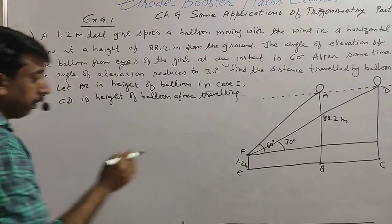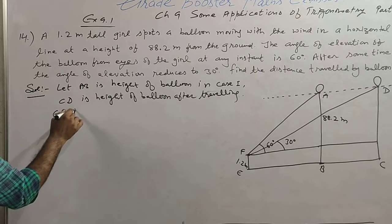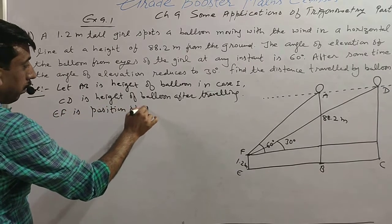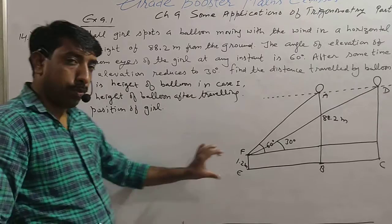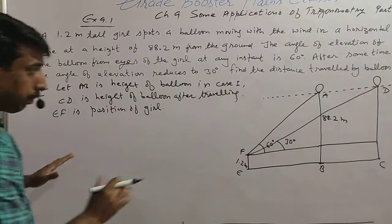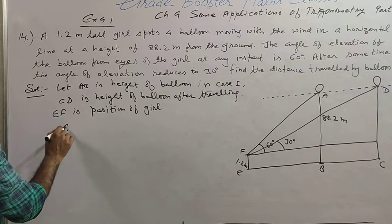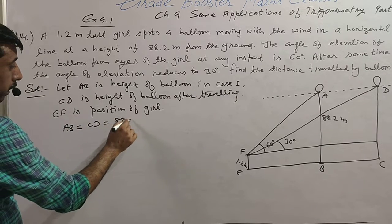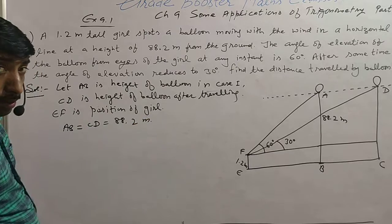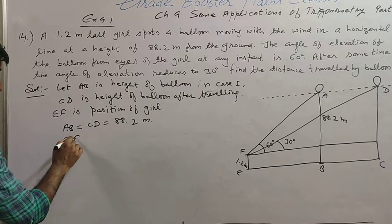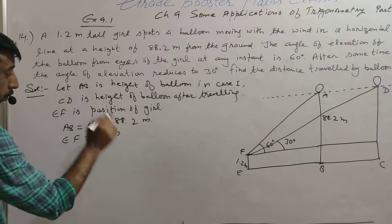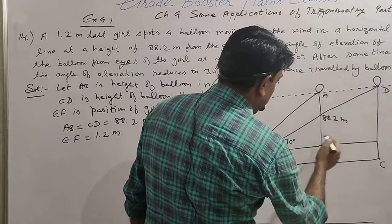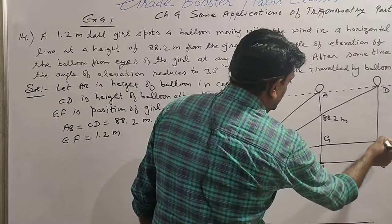EF is the position of the girl. AD equals CD equals 88.2 meters. EF is 1.2 meters — the height of the girl. The points are named EF, G and H.